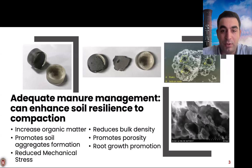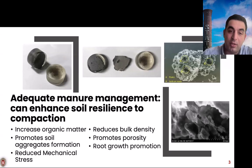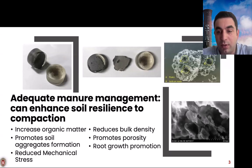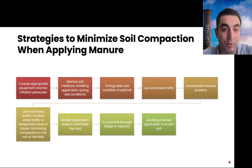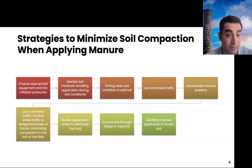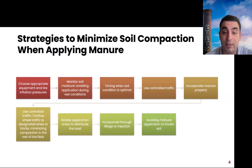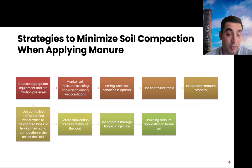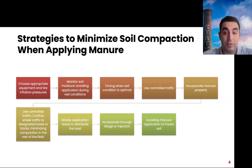Those pores are where we store nutrients and water, and organic matter can act as a binding agent between particles and contribute to pore creation. Strategies to minimize compaction include choosing appropriate equipment, avoiding field traffic, and monitoring soil moisture — having heavy equipment in the field when it's moist is critically important. Timing, soil conditions, and proper manure incorporation — whether reduced tillage or liquid application — are all important considerations.